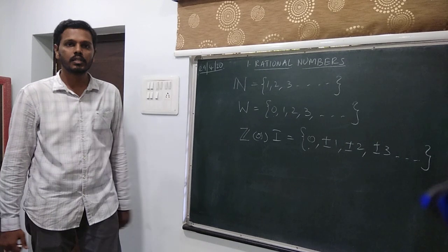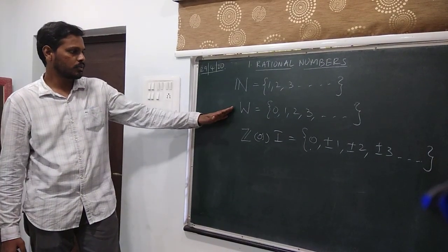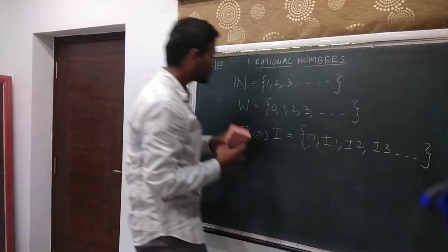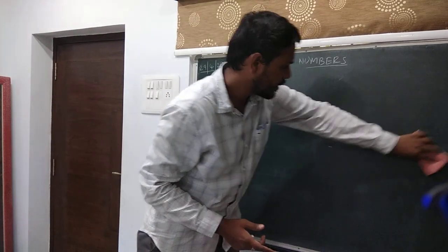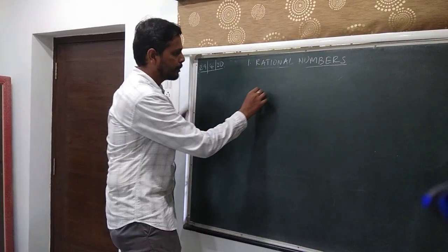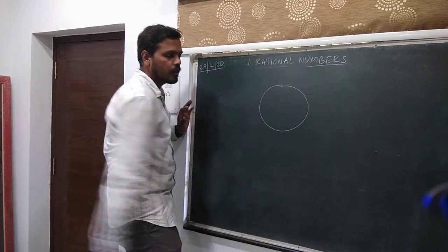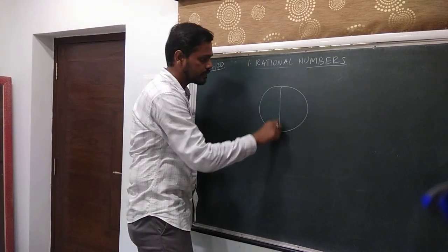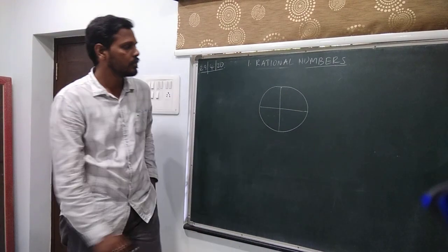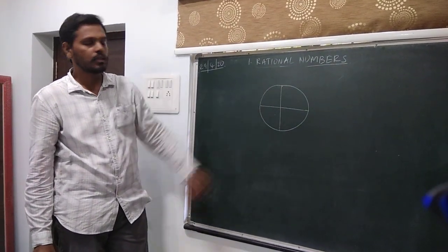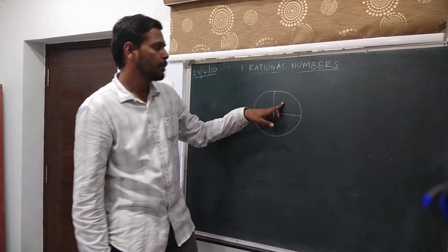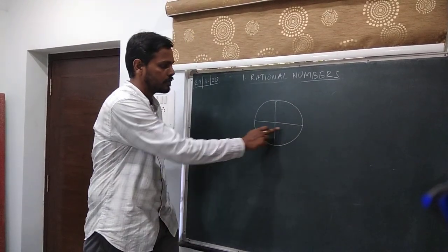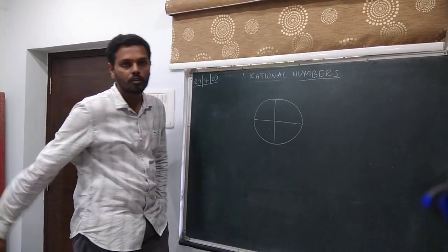Those are the kinds of numbers we discussed: natural numbers, whole numbers, and integers. Now let us consider this situation. Suppose you have a cake and you need to consume it over 4 days in equal quantities. Generally what we do is divide this cake into 4 equal parts, consuming each part each day. Now this part is 1 part out of all the 4 parts.